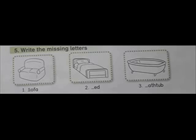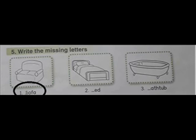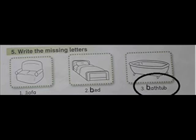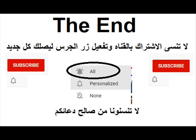Open your activity book, page 43. Exercise 5: write the missing letters. Sofa. Bed. Bathtub. Thank you.